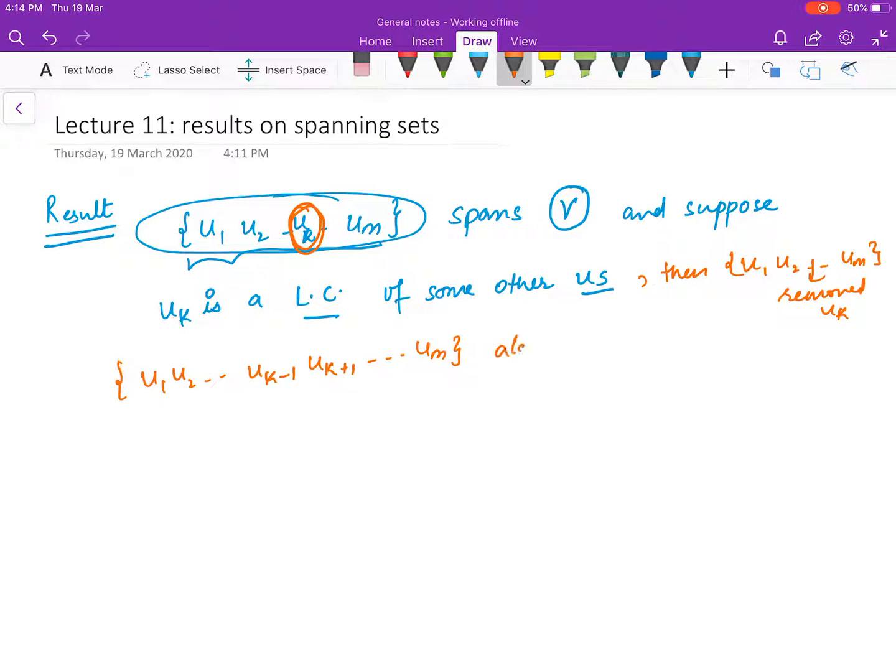Also spans V. This is quite natural. For example, you can relate it to something like there is a task, and the completion of the task needs one plumber and one electrician.